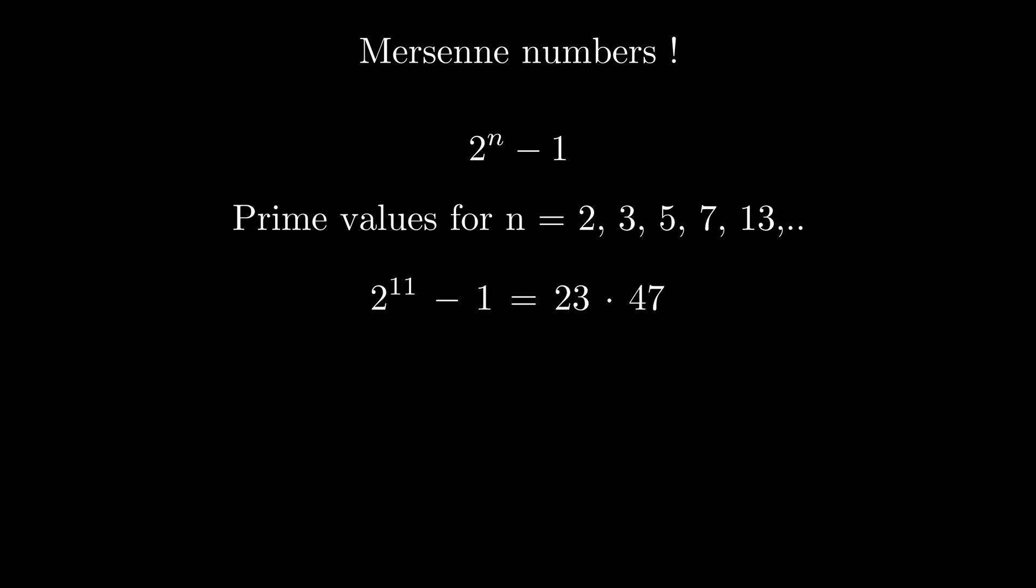But 2 to the 11th minus 1, for example, is composite. It is not known whether there are infinitely many Mersenne primes, and in fact there is a big hunt for larger and larger Mersenne primes.